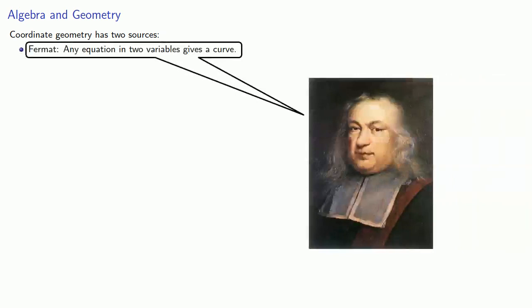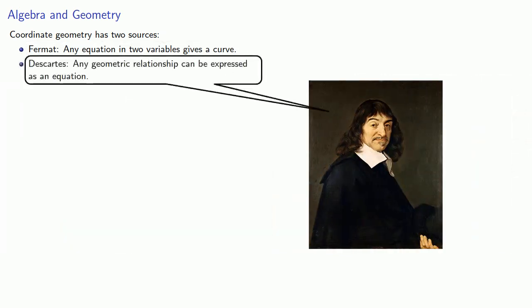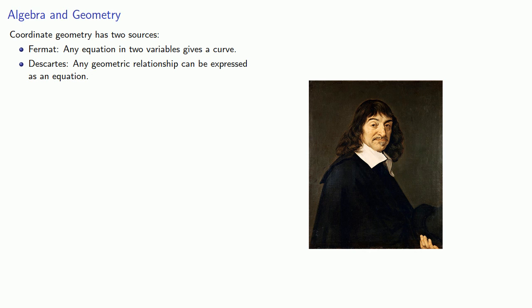What we think about as coordinate geometry has two sources. Fermat, who said that any equation in two variables gives a curve, and Descartes, any geometric relationship can be expressed as an equation. Now, what we usually call coordinate geometry is closer to Fermat's ideas than to Descartes. But, several important curves have equations from Descartes' idea.